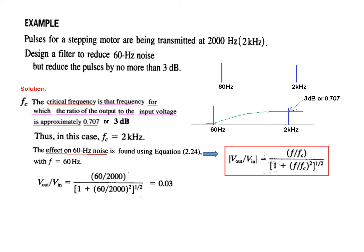Putting in the values, we get the value to be 0.03. That means the noise will be reduced to 0.03 or 3%. Thus we can see that with this design, only 3% of the 60 Hz noise remains. That is, it will be reduced by 97%.